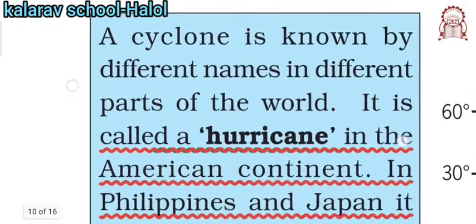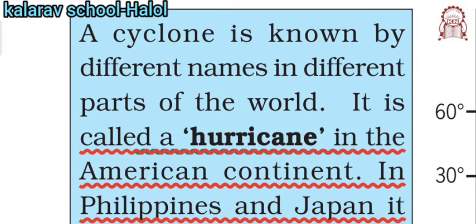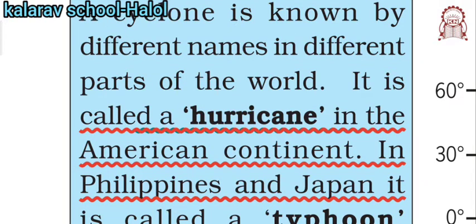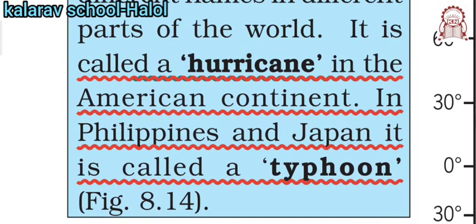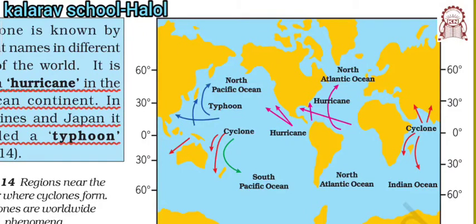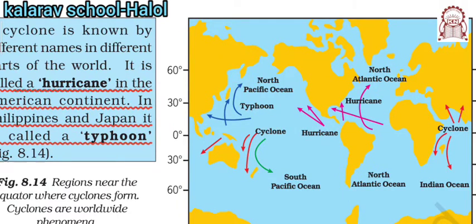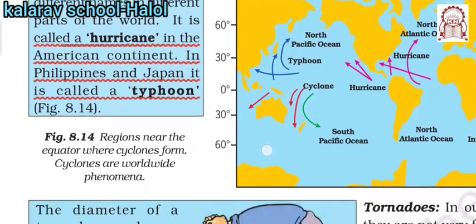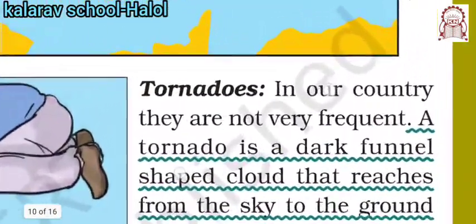A cyclone is known by different names in different countries. It is called a hurricane in the American continent. In the Philippines and Japan it is called a typhoon. It is called a cyclone in the Indian Ocean and the North Atlantic Ocean.